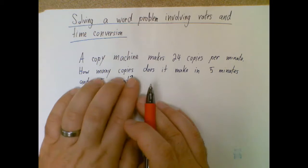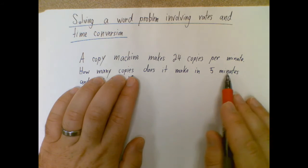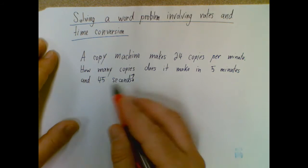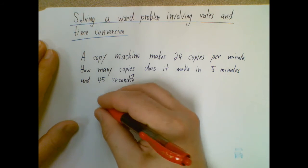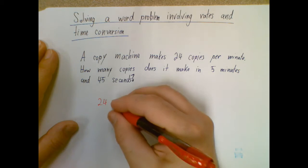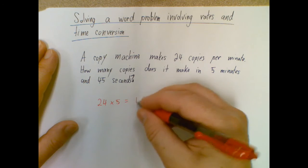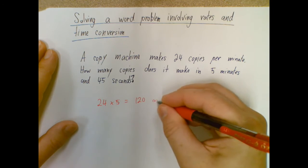If I just look at how many does it make in five minutes, what would I do? Okay. So if that was the case, if I didn't have this 45 seconds, I would just say, well, it's 24 copies per minute. If, and in five minutes, I would just multiply by five and find out that that's going to be 120 copies.